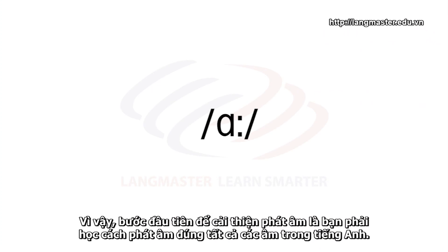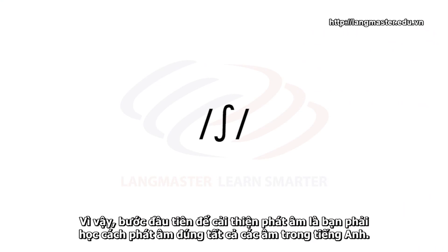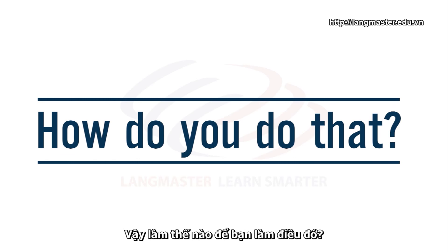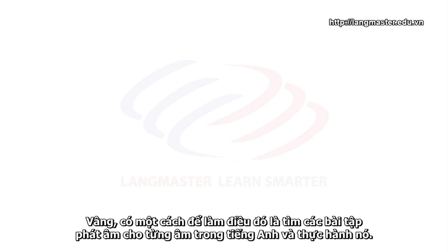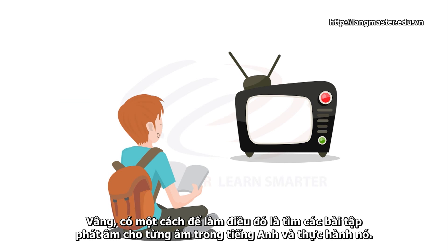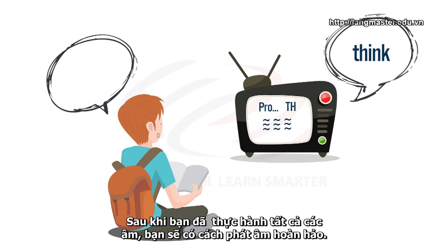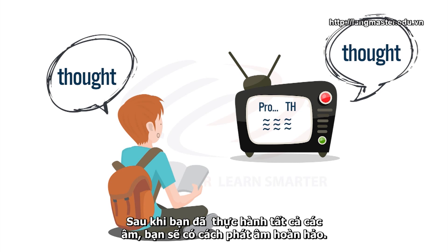So the first step to improve your pronunciation is to learn to pronounce all of the main sounds in English correctly. One way to do that is to find some pronunciation exercises for each sound in English and just practice. After you've practiced making all the sounds, you will have the perfect pronunciation.